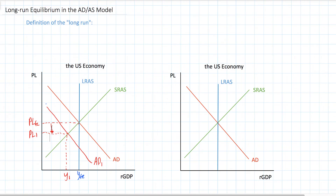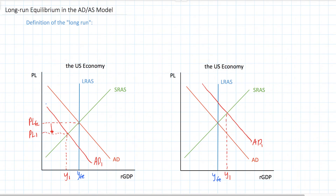If firms could adjust the wage rates they paid their workers as the prices of the goods they produced fell, then they would lower wages when prices fell and continue to produce the same amount of output. On the other hand, if there were an increase in aggregate demand — a positive demand shock, as we see in the graph on the right — in the short-run, firms find it attractive to increase their output and hire more workers because wages are relatively fixed and it's profitable to produce more output. So output increases from YFE to Y1, and there is demand-pull inflation as the equilibrium price level goes from PLFE to PL1.